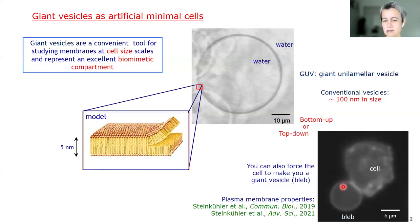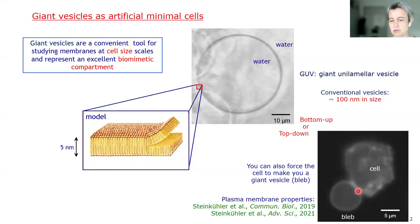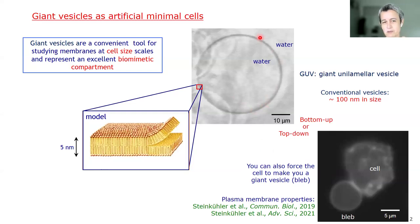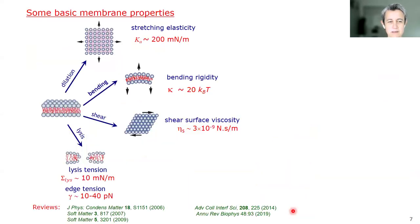These are also called blebs or giant plasma membrane vesicles, where all the plasma membrane proteins are properly reconstituted and oriented, and you have the whole zoo of lipids. You might be surprised to know that the mechanical properties of such giant plasma membrane vesicles are very similar to those of single or two-component lipid vesicles, which is to say that the underlying mechanics is set by the lipid bilayer.